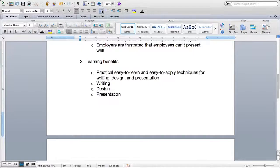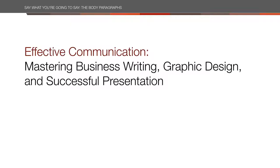Remember at this stage I'm just trying to construct decent sentences, not perfect ones. I'm just trying to get what I need on the page where I need it. We'll come back later and revise. Our third paragraph is about learning outcomes — it's about answering the need I established in the second paragraph. I'm going to keep this one simple and benefit-based. I feel like the course title pretty much says it all: Effective Communication, Mastering Business Writing, Graphic Design, and Successful Presentation.